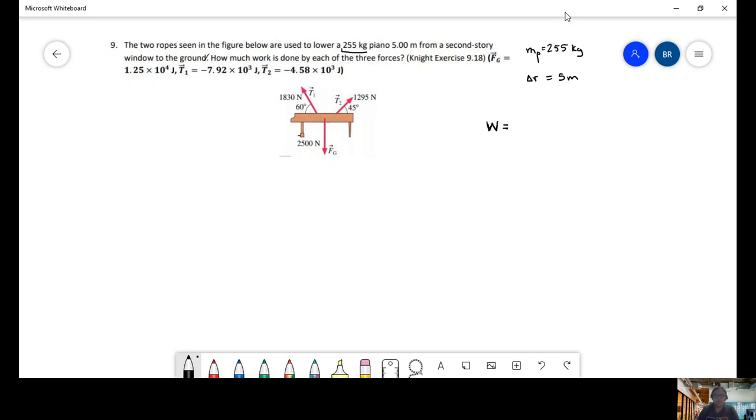So, we have work equals to force cosine of the angle times the distance. And these two are vectors. This is also known as the dot product, which can be calculated as F, r, cosine of the angle.